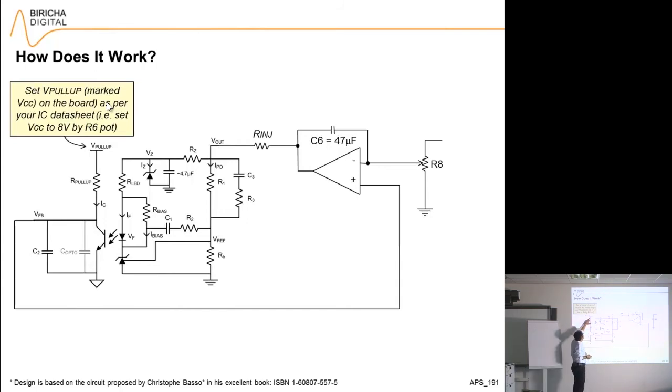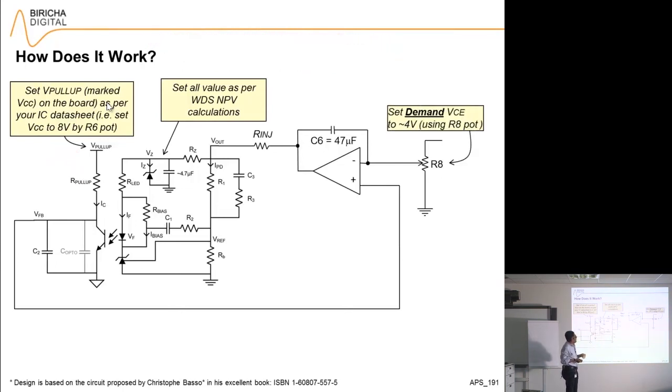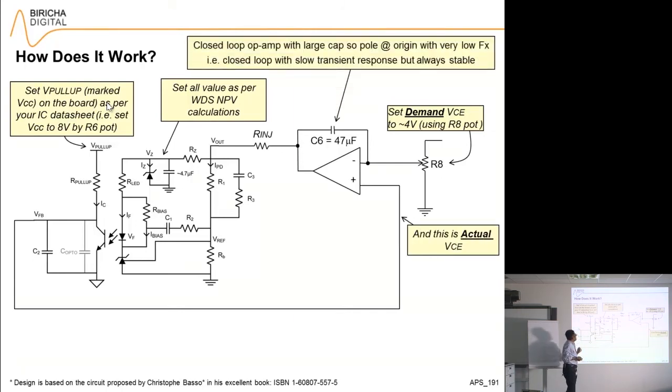On the board, you can set the pull-up to whatever value. Because we are using a chip that is giving us 8 volts, we set this to 8 volts so that's identical conditions. WDS will give you all of the required values for the compensation and poles and zeros. Demand value is around 4 volts, so we set that using the pot on board. That is the actual value of VCE. This is a closed-loop op-amp with a very large capacitor at a pole at origin to give you a very slow but stable response. You don't have the fast transient. All you want to do is make sure this stays fixed at 4 volts.